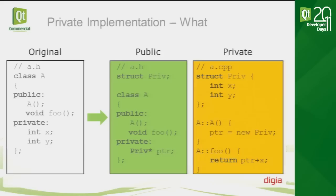So what is the private implementation design pattern? In its simplest form, you split the class into two different parts: the public part and the private part. The public part provides the API and holds a pointer to the private class. In essence, the public class has just one data member, which is the pointer to the private class. The private class then contains all the actual data, member variables, and things like that.